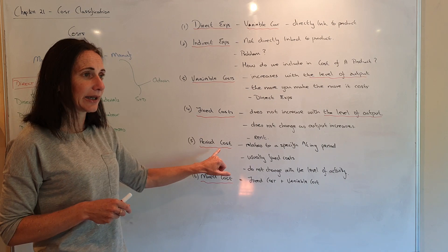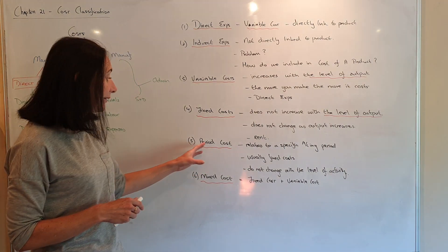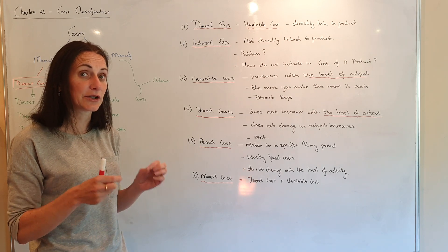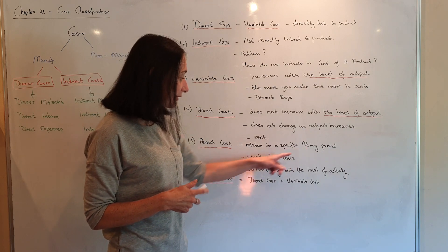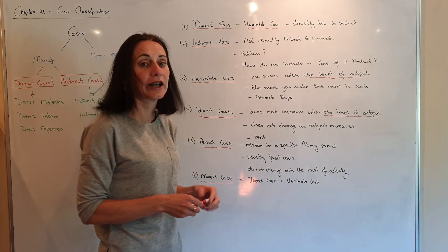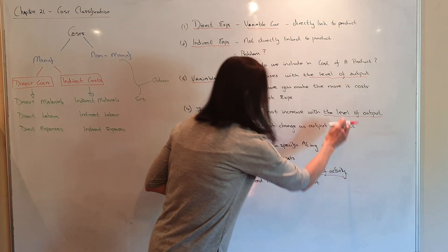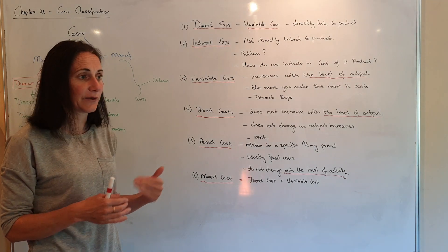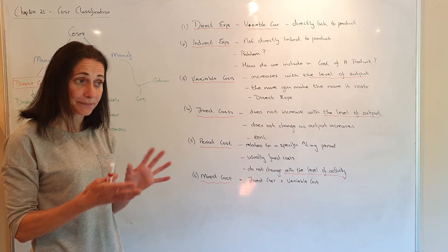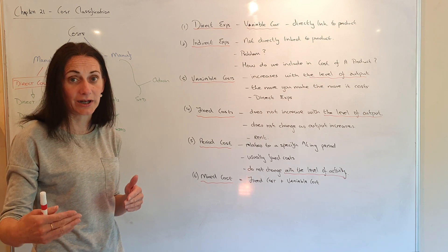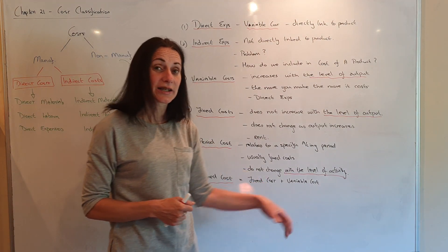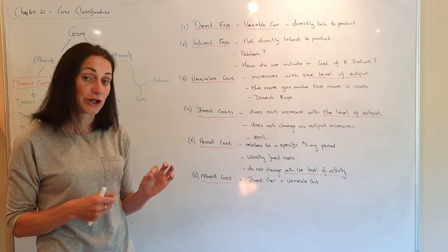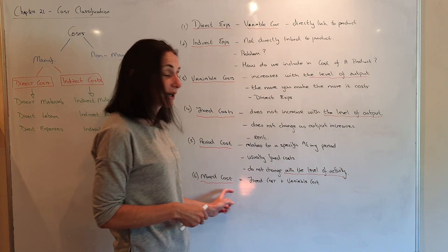And period costs — they can throw these in as exam theory, so just be careful. A period cost, if you think of a period as part of time, is a cost related to a specific period of time. They're usually fixed — not always, but usually there will be a fixed cost and they do not change with the level of activity. Then you have a mixed cost, which is made up of two parts: a fixed cost and a variable cost. A lot of people with their mobile phones might have a standard package, and then if they go over that it becomes a variable cost. It's the same with most people's ESB — you have a standard charge plus however much electricity you use.